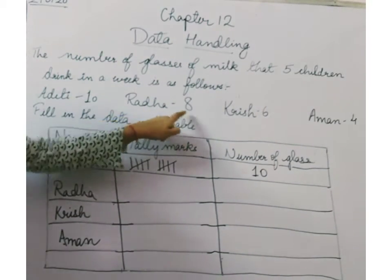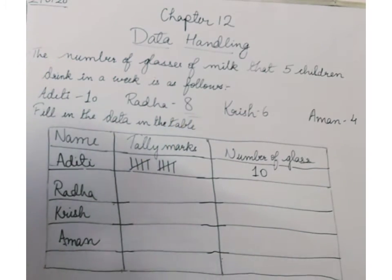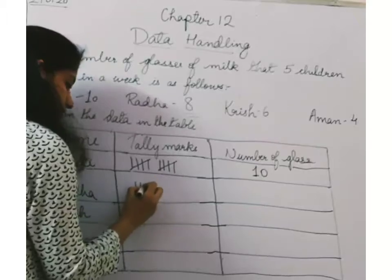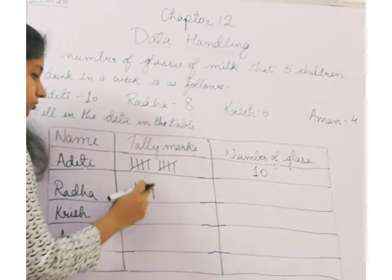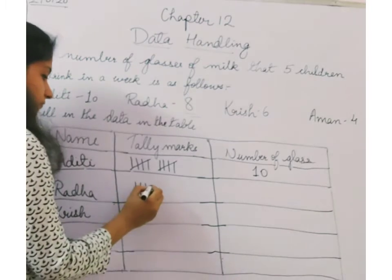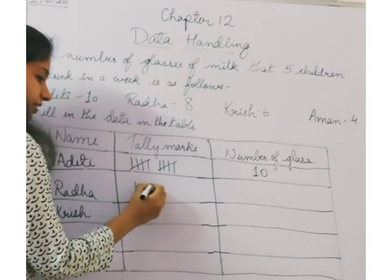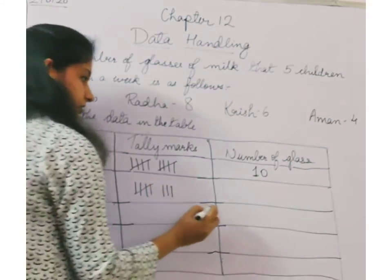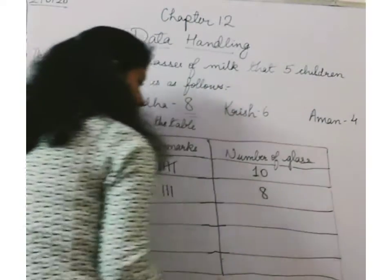Next is Radha. Radha brings how many? Eight. So count with me again: one, two, three, four. Now what students do — after four you strike out, not at three. Make four lines and then strike out. Five, six, seven, eight. So what is the answer? Eight.